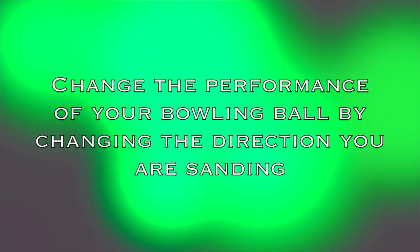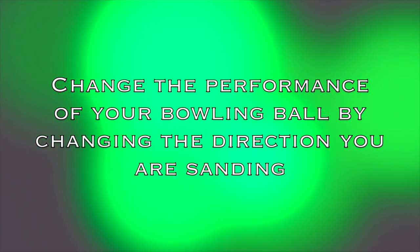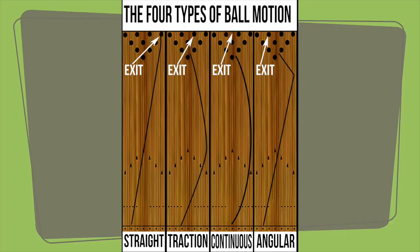But before we get to that, let's talk about some basics. In bowling, there are four types of ball motion: angular, continuous, traction, and straight. Using these four types of ball motion, we can create an arsenal for any tournament or league.